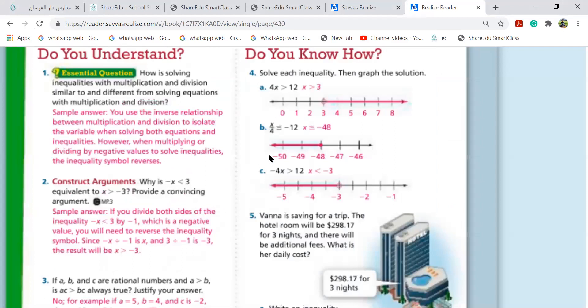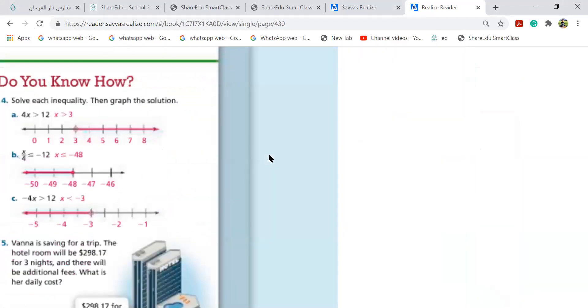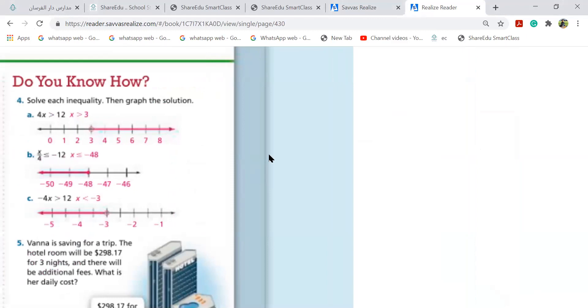Page 282, question number 1a, 4x is greater than 12. Simple. X is greater than 12 over 4. X is greater than, if I divide 12 and 4, I get 3. I'm not explaining because this is very simple. Put your point at 3 and go to the right side because it is greater than.